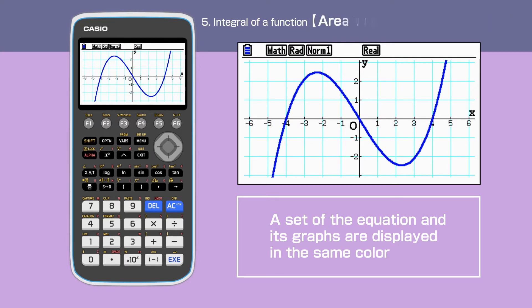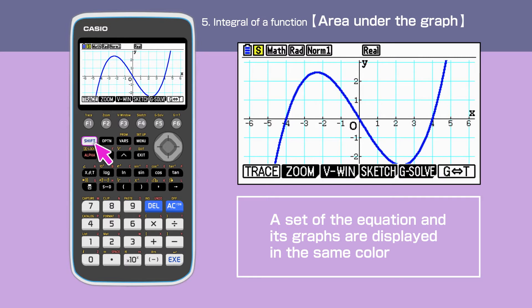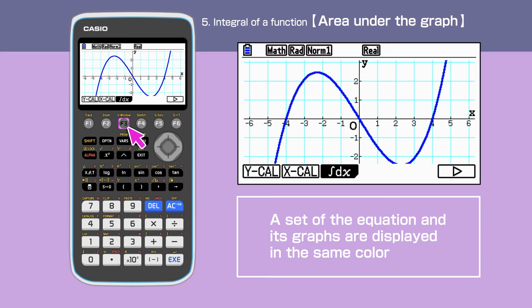We can find the area under the graph by pressing Shift F5 to open the G-SOLV command. Press F6 to go to the next set of command page and select the integration command by pressing F3.